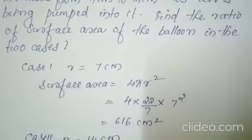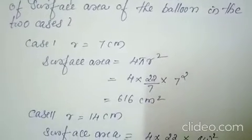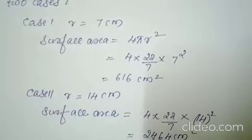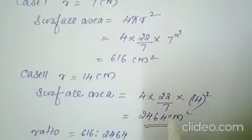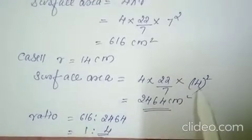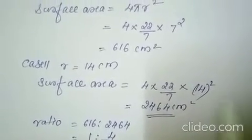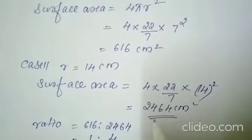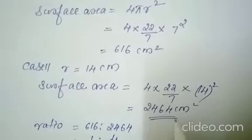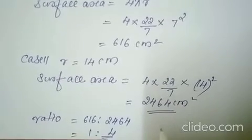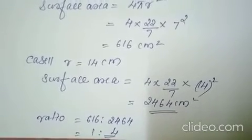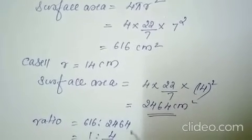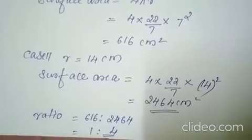Case two: r equals 14 cm. We have to find the surface area using the formula 4 pi r square — 4 into 22 by 7 into 14 square, that is 14 into 14. 7 cuts with 14, you will get 2. Multiply all these numbers, you will get the answer 2464 cm square. We have to find the ratio: 616 ratio 2464. How many times? It will be 1 is to 4.